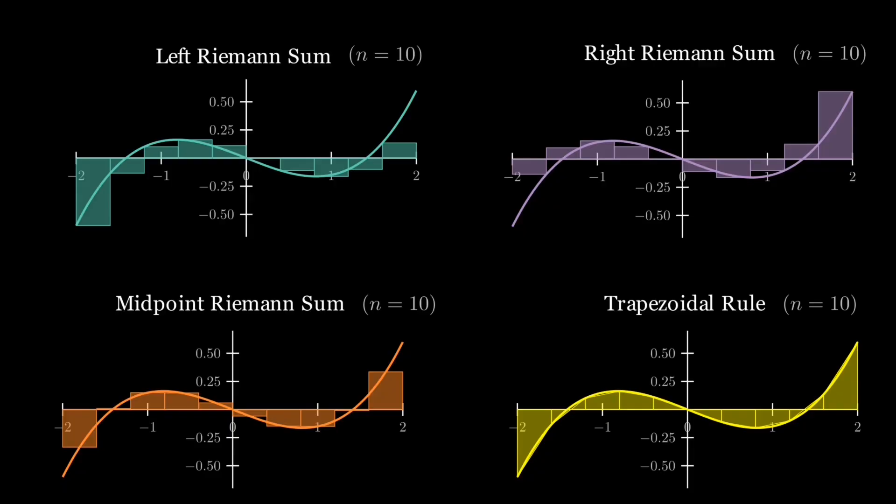All of them share the same core idea: break the domain into small pieces, approximate each piece's area, and add them up. This approach will carry straight into physics, where tiny local contributions build up to a total.